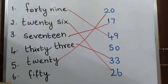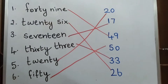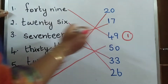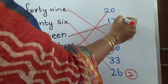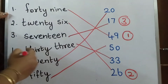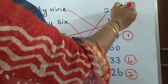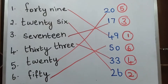Next, 50 — F-I-F-T-Y is 50. Children, you can match like this, or you can put the number like this: 49 is 1st, 26 is 2nd, 17 is 3rd, 33 is 4th, 20 is 5th, and 50 is 6th. In either way, you can match it, children.